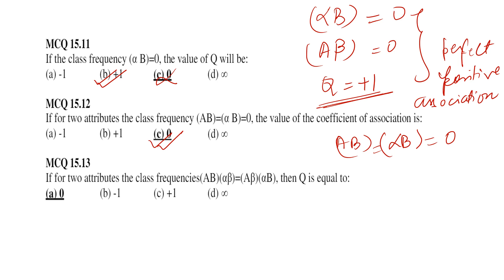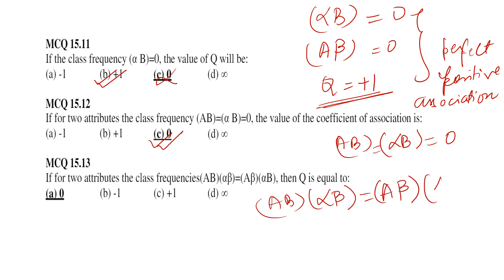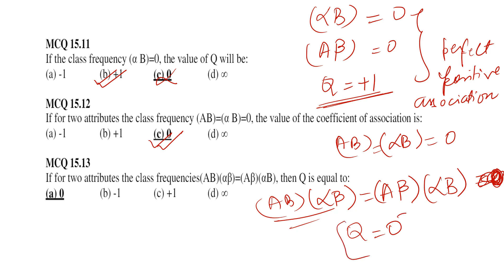If for two attributes the class frequencies AB × αβ = Aβ × αB, then Q equals 0. When the product of AB and αβ equals the product of Aβ and αB, the coefficient of association Q becomes 0, meaning no association between the two attributes.